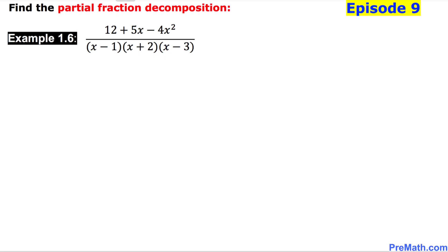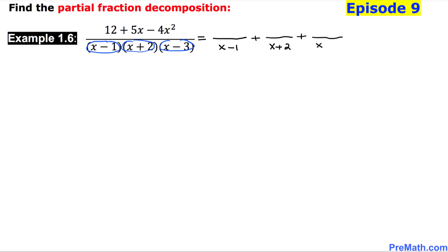Let's focus on the denominator right now. You can see we have three linear factors in the denominator. That means we are going to have three fractions, separated by plus signs. The first one is x minus 1, the second one is x plus 2, and the third is x minus 3. On the numerator it's going to be constant A for the first one, constant B for the second, and constant C for the third.